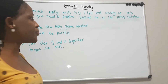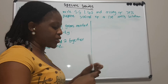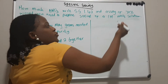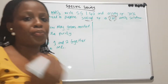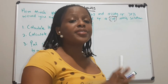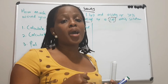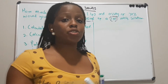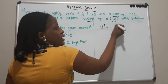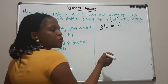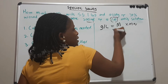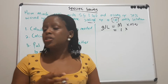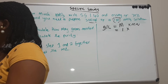Let's follow our recipe and start calculating. For step one, we need to calculate how many grams are needed. We are given the molarity and the volume to prepare. We can use the molarity formula: grams per liter equals molarity multiplied by molecular weight. The molarity is 1, and the molecular weight of nitric acid, calculated from the periodic table, is 63.